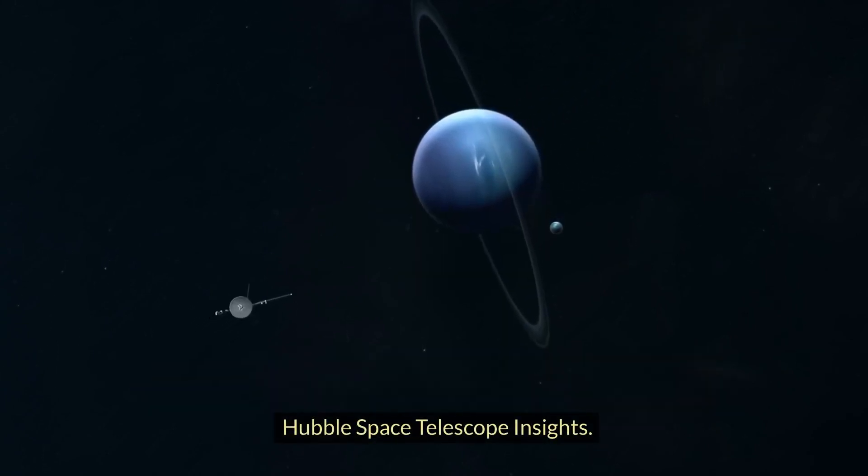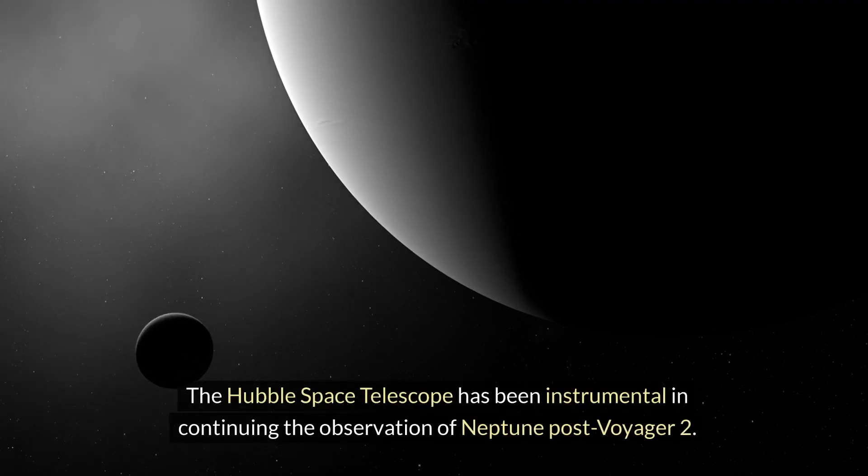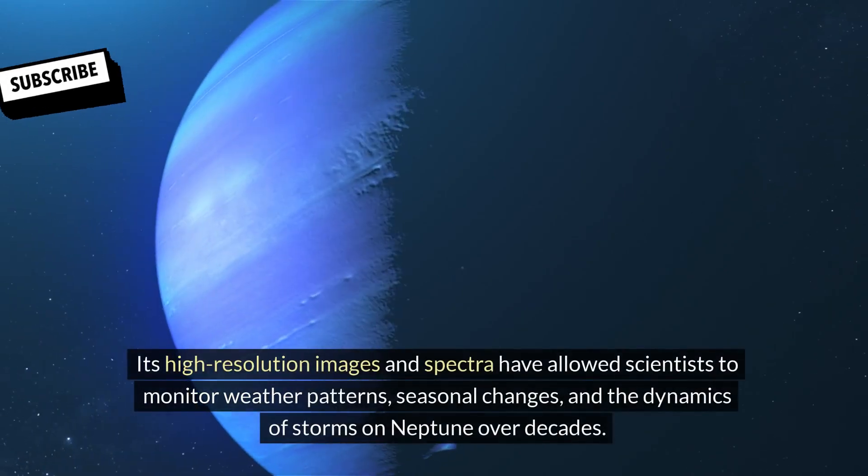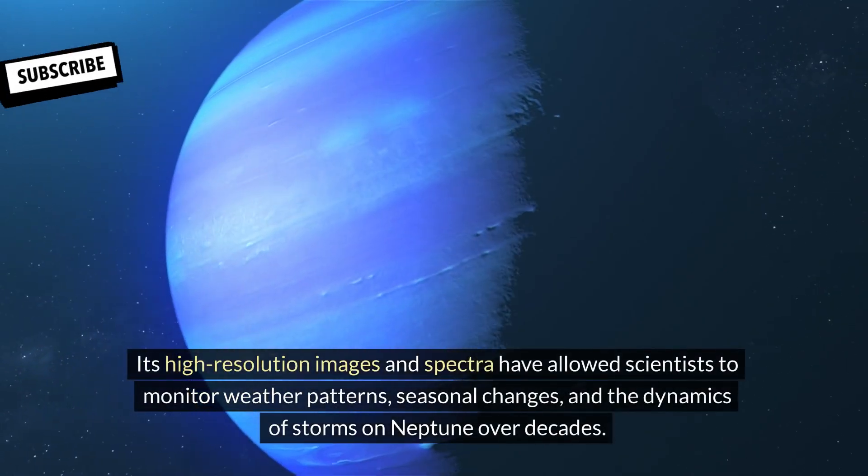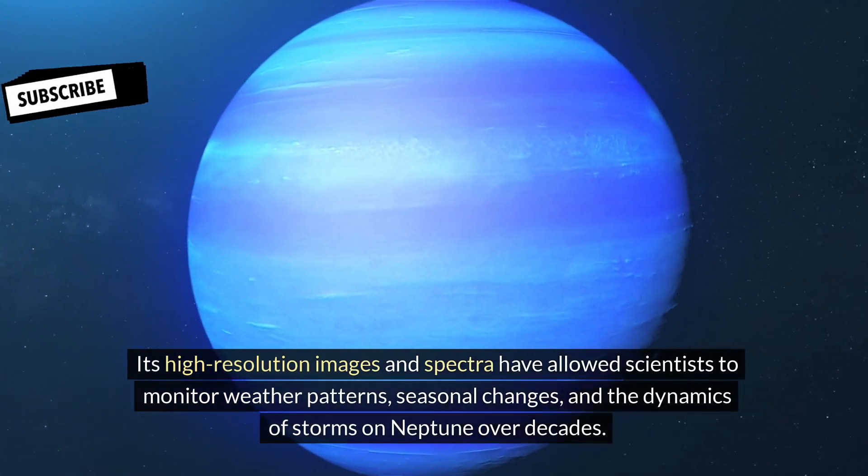Hubble Space Telescope Insights: The Hubble Space Telescope has been instrumental in continuing the observation of Neptune post-Voyager 2. Its high-resolution images and spectra have allowed scientists to monitor weather patterns, seasonal changes, and the dynamics of storms on Neptune over decades.